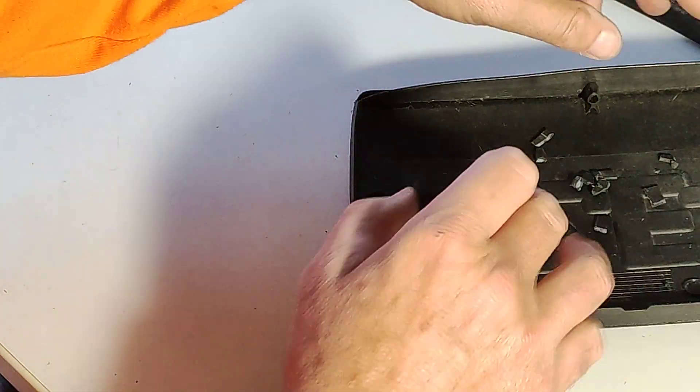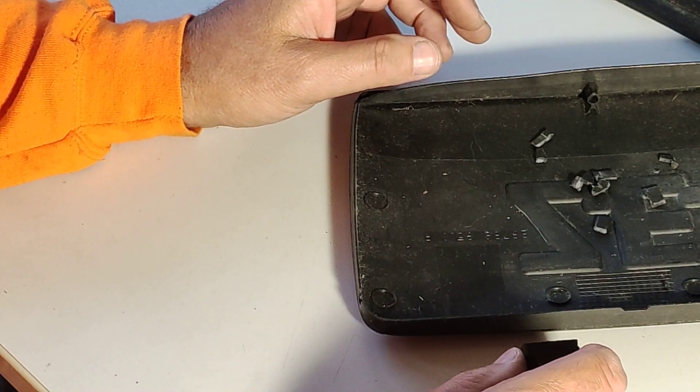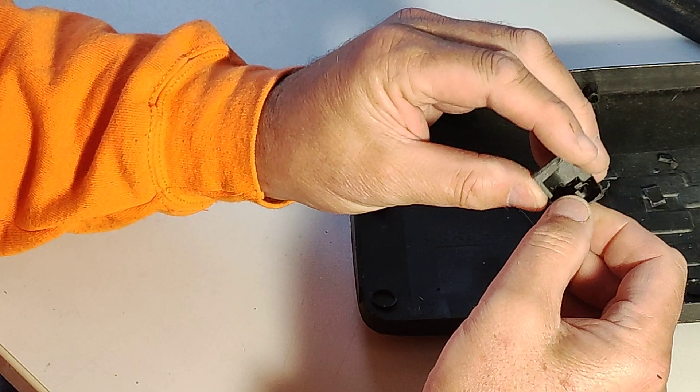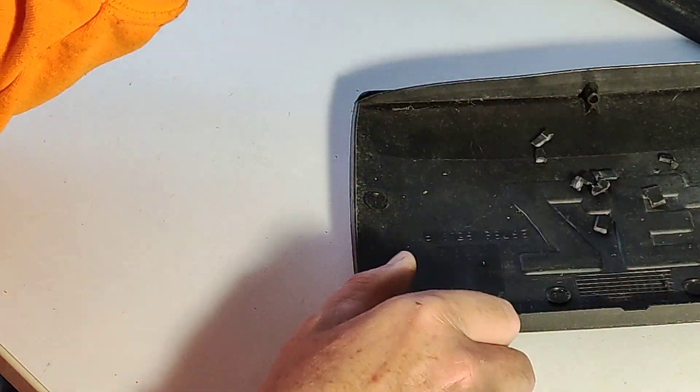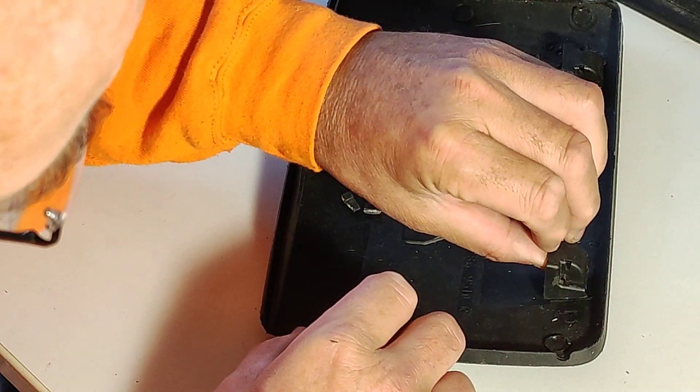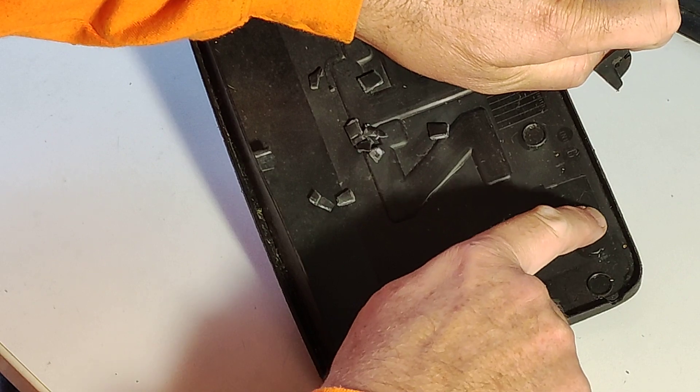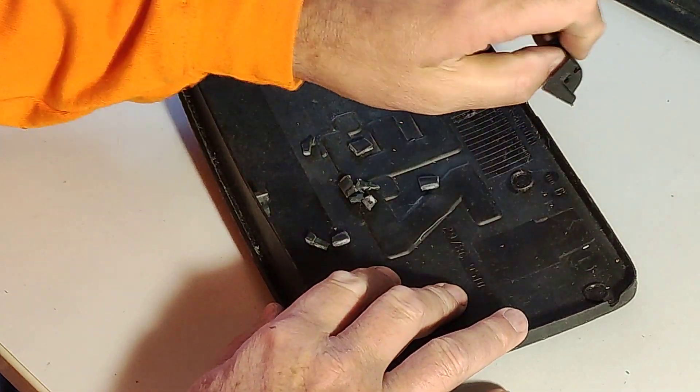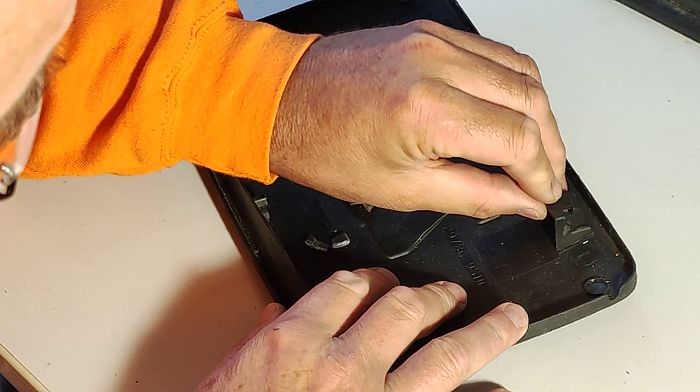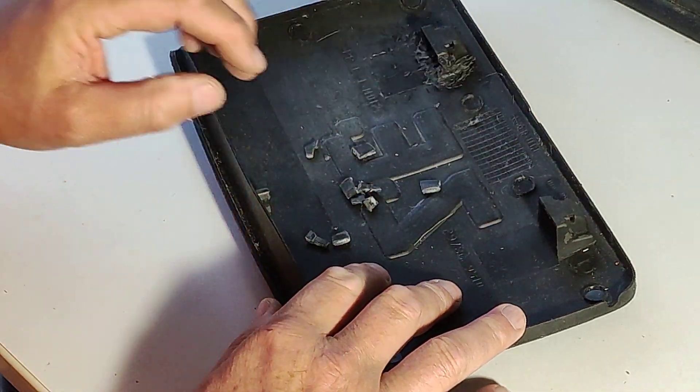After you have cleaned the flap from former repair tries so that there is no glue or anything else on the original parts, you can start to look where it has to be fixed. You can see the old fixings here, and there you can put the part exactly on the place where it has to be.